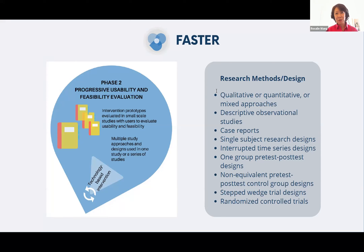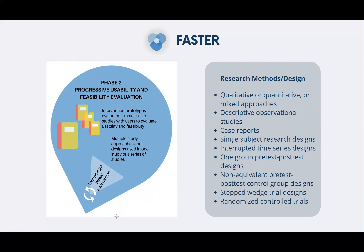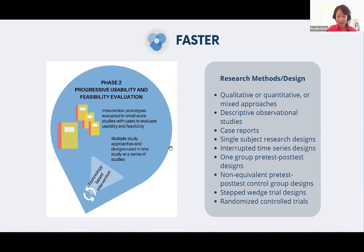In phase two, we envision multiple study approaches and designs used in one study or a series of studies looking at usability and feasibility outcomes. We add more options in terms of designs: interrupted time series designs, one-group pretest-posttest designs, non-equivalent pretest-posttest control group designs, stepped wedge trial designs, and randomized controlled trials. Anticipated outputs include a comprehensive understanding of users, the intervention and delivery processes and use contexts, evidence for usability and feasibility, and more feedback to refine the intervention and evaluation processes.